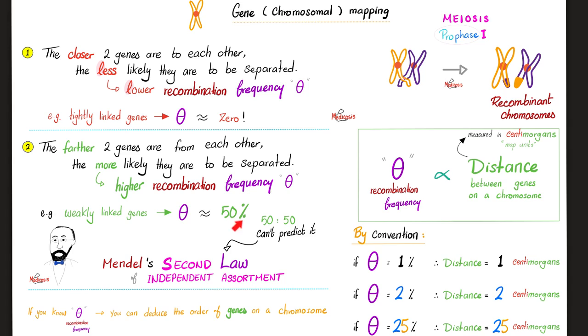Their theta will be closer to 50%. 50-50, I can't predict it, can't tell, it could be this, could be this. Who is going to win the football match? I cannot tell, it's 50-50. Like it's kind of independent? Yeah, this is Mendel's second law of independent assortment, because Mendel knew about the weakly linked genes, but he did not understand that some genes are tightly linked.